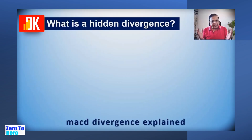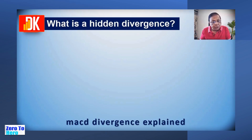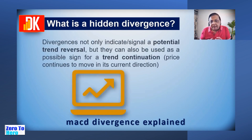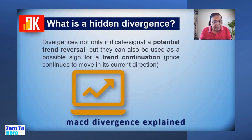What is Hidden Divergence? As discussed in Part 1, regular divergences indicate a possible trend reversal. However, divergence when put to use can also help to understand continuation in the trend. So divergence not only signals a potential trend reversal, but can also be used as a possible sign for trend continuation — that the price moves in the direction of the prevailing trend.